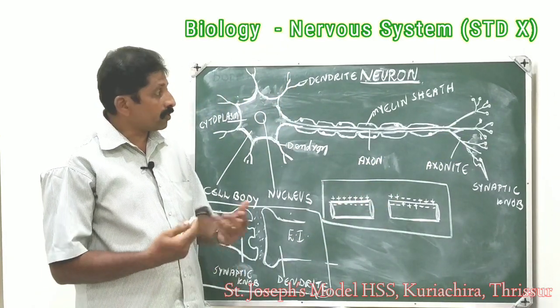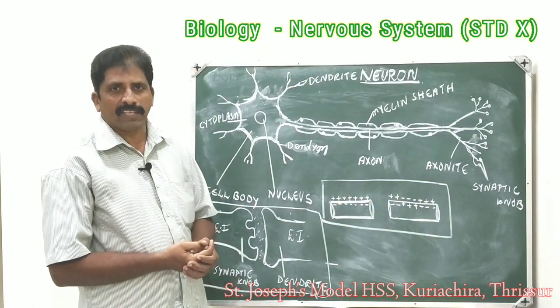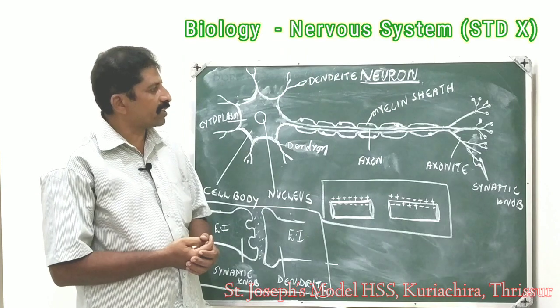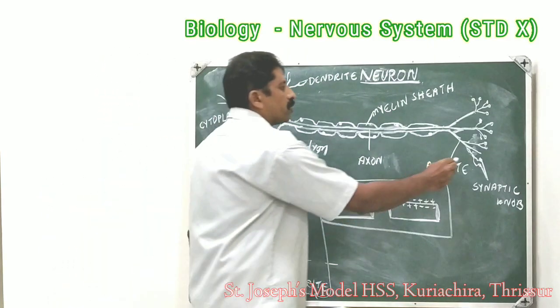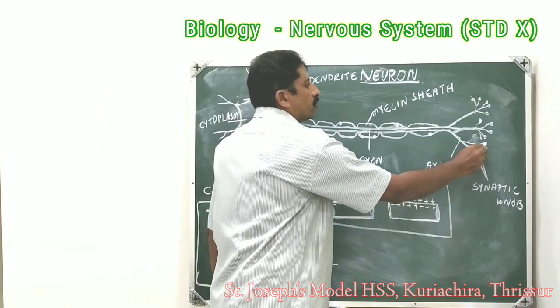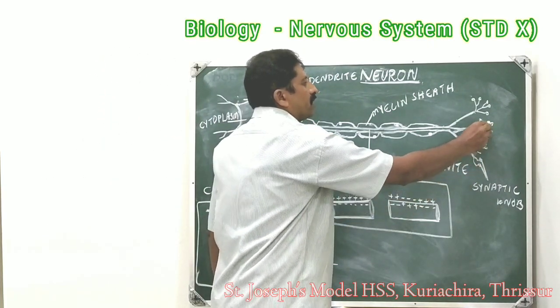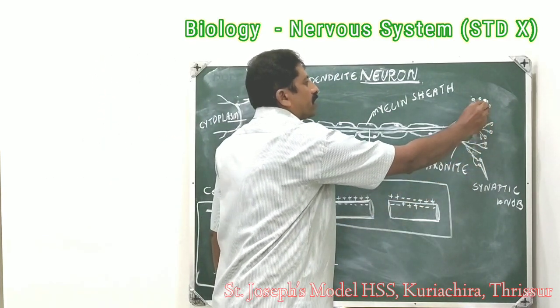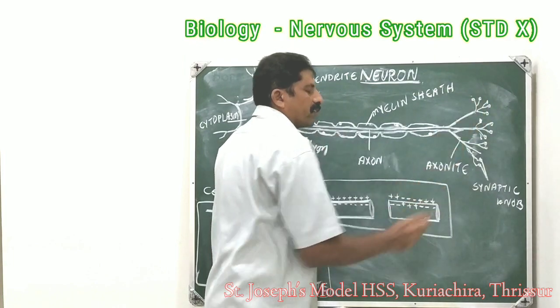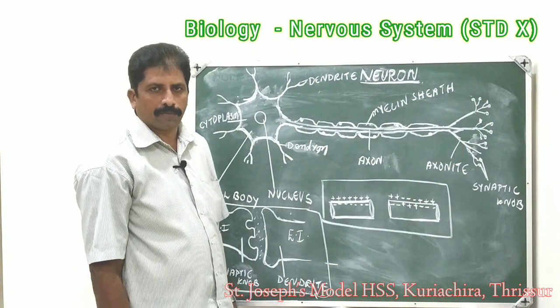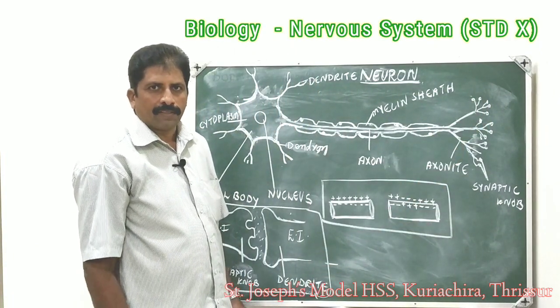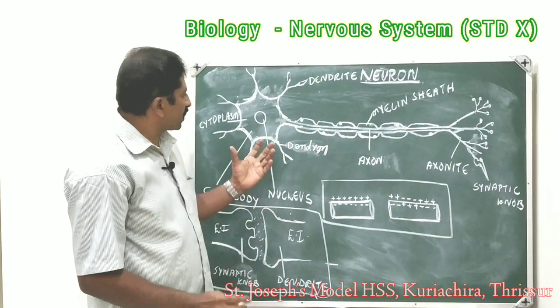The axonites end in swellings. These swellings are called the synaptic node. Swellings at the tip of the axonites are called the synaptic node.